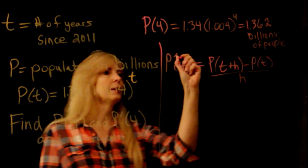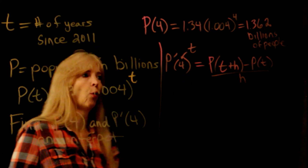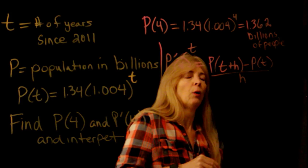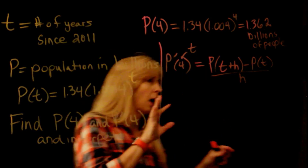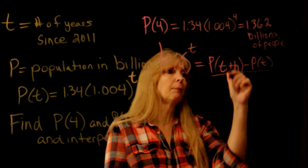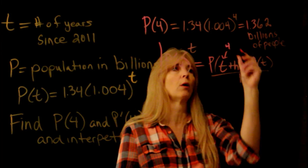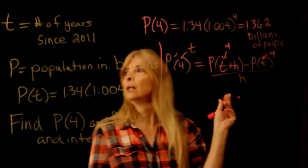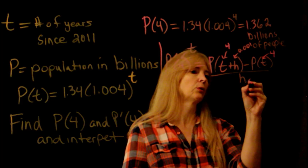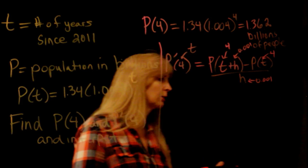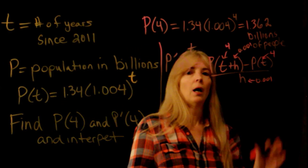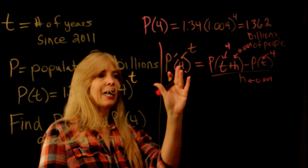I know what t is — t is 4. But the problem is I don't know what to plug in for h. Until we learn the shortcuts, I'll just pick something really, really small. So I'm going to plug in 4 for t everywhere, and for h I'll plug in 0.001. I want to get at exactly 4, so the smaller h is, the better.